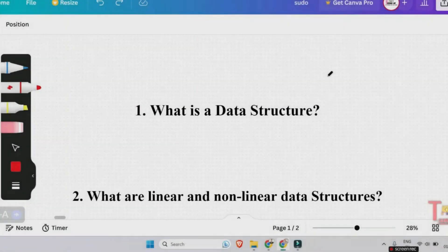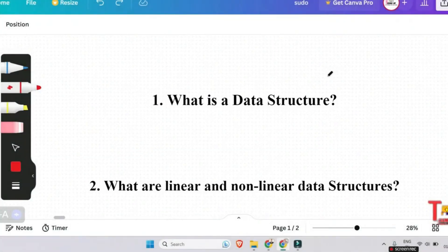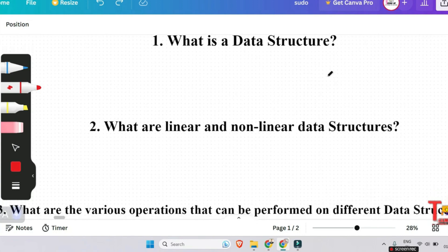What is data structure? Data structure is a way of organizing data so that the data can be used efficiently. Examples: stack, queue, tree, hashes, linked list, etc.